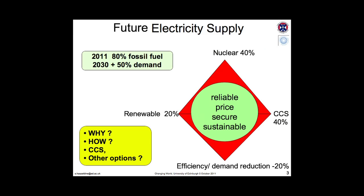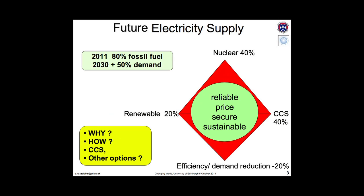The problem is that we all want reliable electricity at a cheap price — an unfeasibly cheap price. We want it from secure sources so we don't have to import energy from anywhere, which is entirely unrealistic at the moment. And we want it to be sustainable. These aims are what electricity might look like in the UK in 20 or 30 years' time. If you're a fan of renewables, as I am, you might look for 60 or 80% renewable energy and much less nuclear. But you've only got these four dimensions to play with.